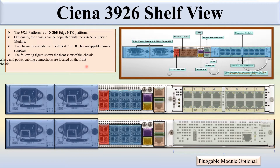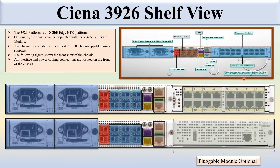The following figure shows the front view of the chassis. All interfaces and power cabling connections are located in the front of the chassis. In this diagram, you can see what the different components mean. This is the power supply. This is 6x10G SFPs. This is 2x1G or 100MB SFPs. This is for PPS. This is the BITS port. This is the management console port. This is the USB port. This is the pluggable module slot — you can put either the X86 NFC server module or use this slot for TDM traffic. This is a brief overview of the Sienna 3926 self-view.